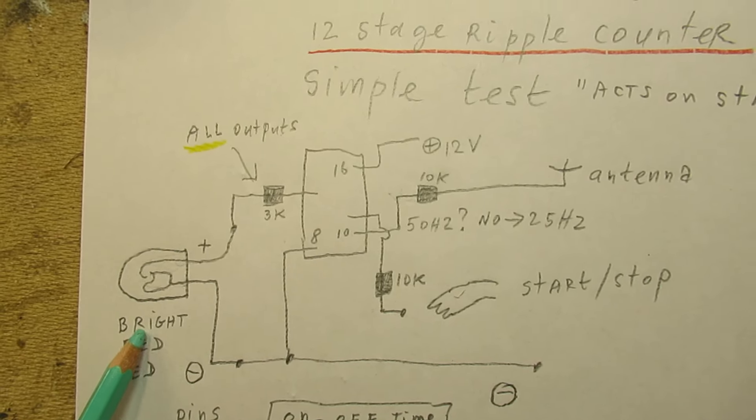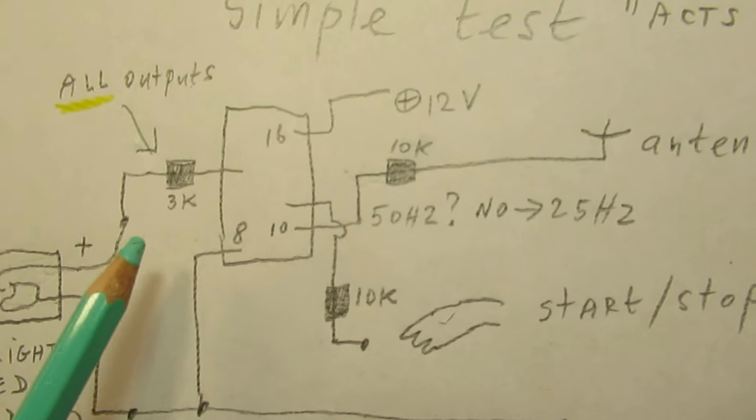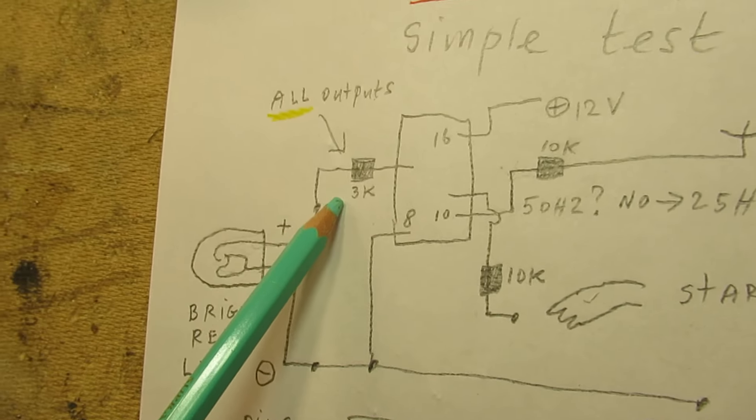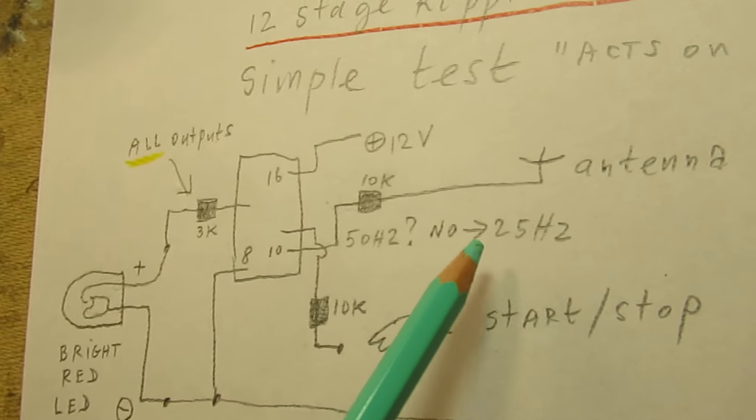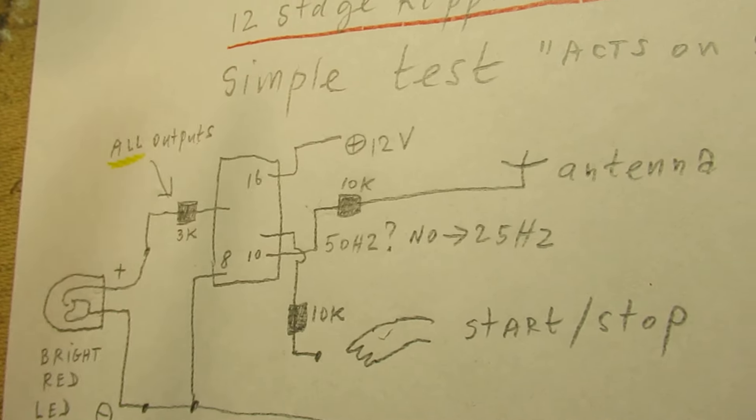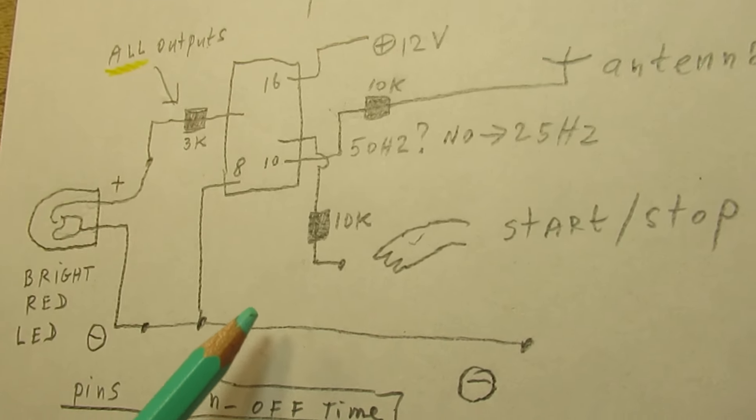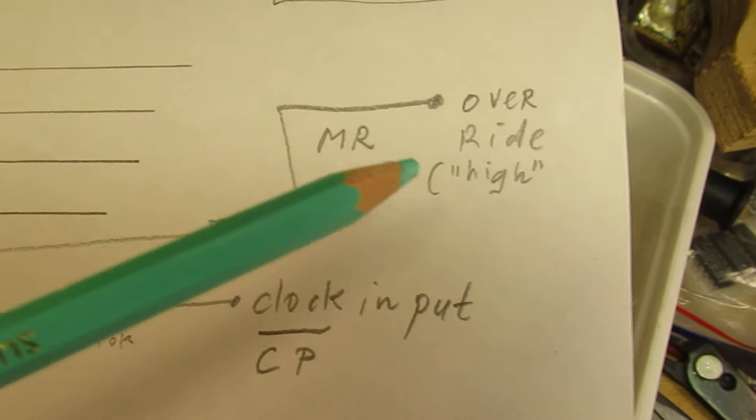These are the bright red LEDs. They are connected to all the output pins via a 3k resistor. The clock input is that antenna that picks up 50 hertz in the room where I live. And also interesting, there is that override pin, a kind of reset pin.